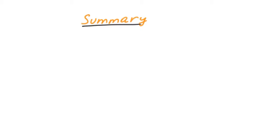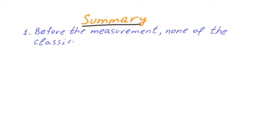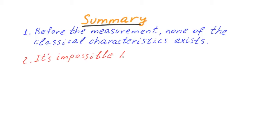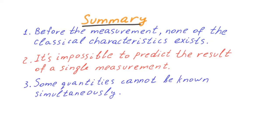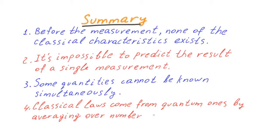Let's summarize. Before the actual measurement, none of the classical characteristics objectively exists — we cannot assume that spin has a certain direction before we observe the deviation of the electron. This general statement applies to all observable quantities. In general, it is impossible to predict the result of a single measurement; quantum mechanics allows us to calculate only the probability of an event. There are physical quantities that cannot be known simultaneously: the measurement of one makes irrelevant previous information about the other. Deterministic classical laws come from probabilistic quantum mechanical ones by averaging over a large number of particles.